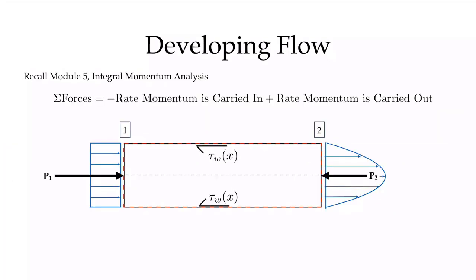Let's think about the developing flow region and recall integral momentum analysis. Drawing the control volume in red, we add the forces acting on it. At Section 1, where flow enters, we have pressure P1 acting on the control volume. At the end of the developing flow region, we have a smaller pressure P2 acting in that direction. We also have wall shear stresses acting on the surface of this control volume, and we can evaluate these to understand how pressure is changing in the developing flow region.